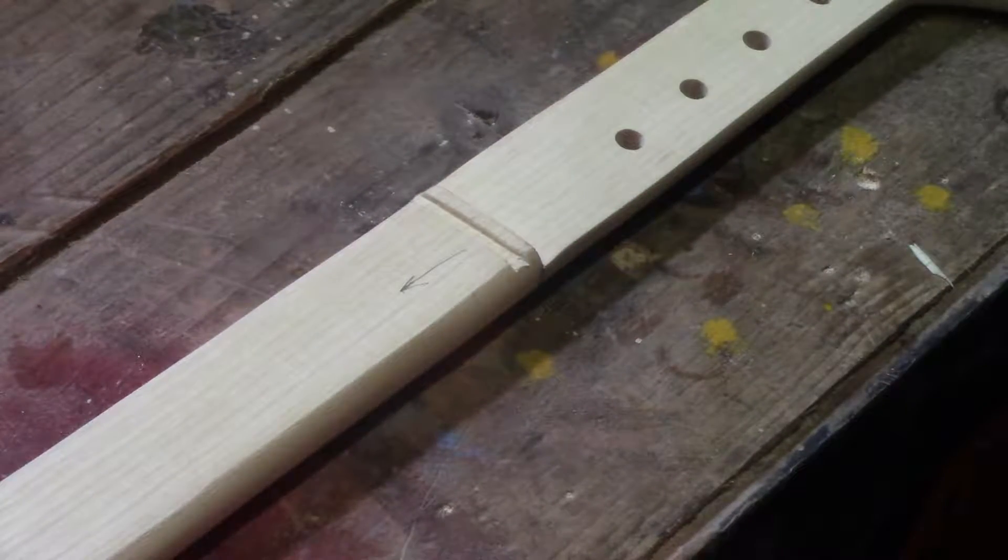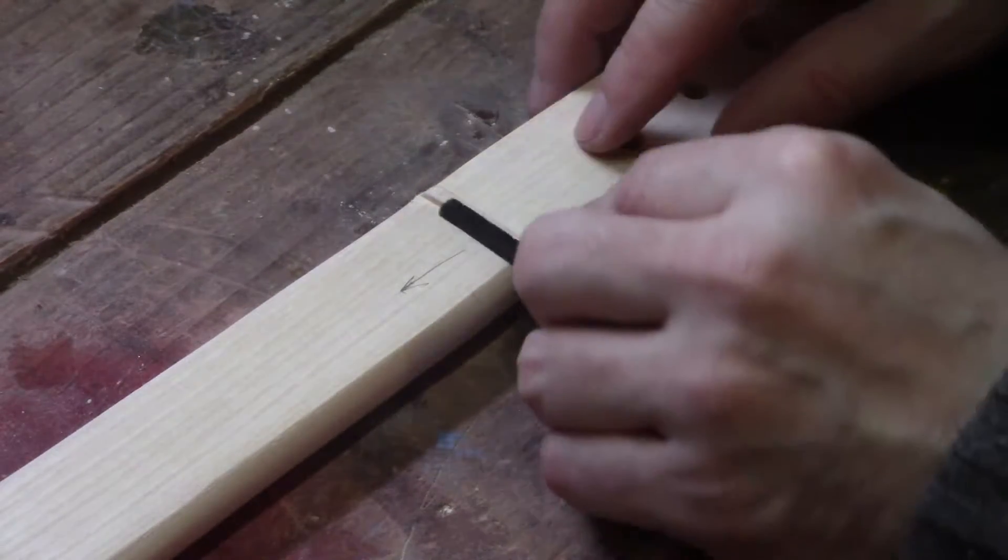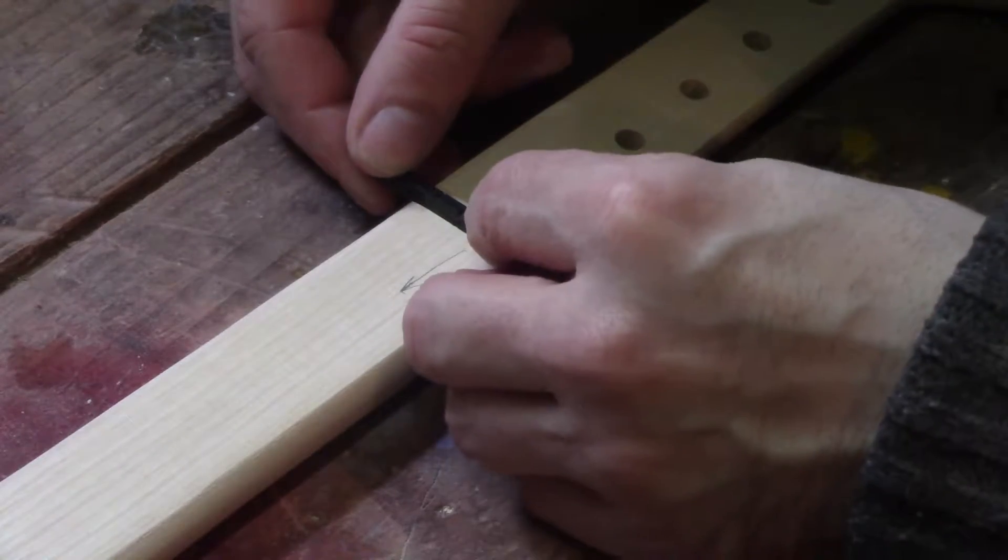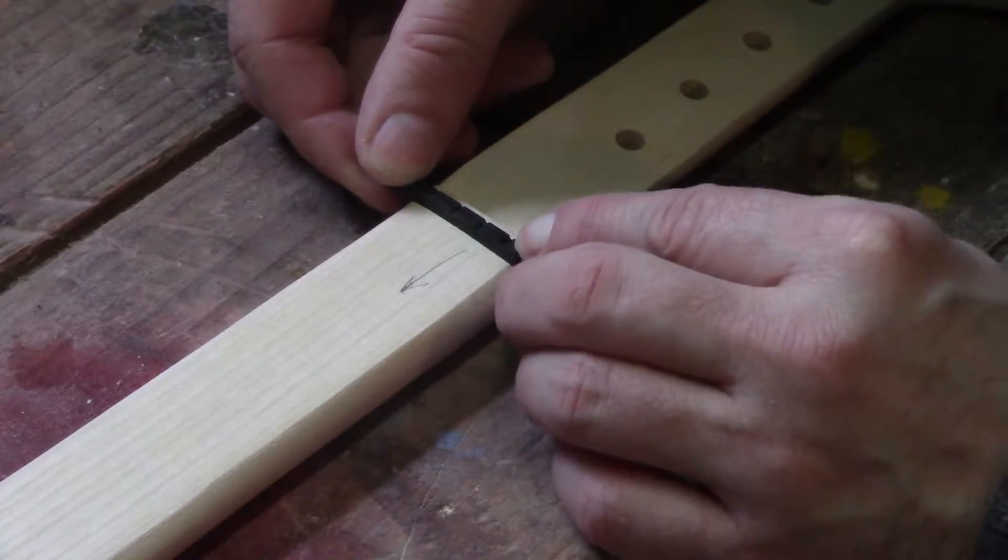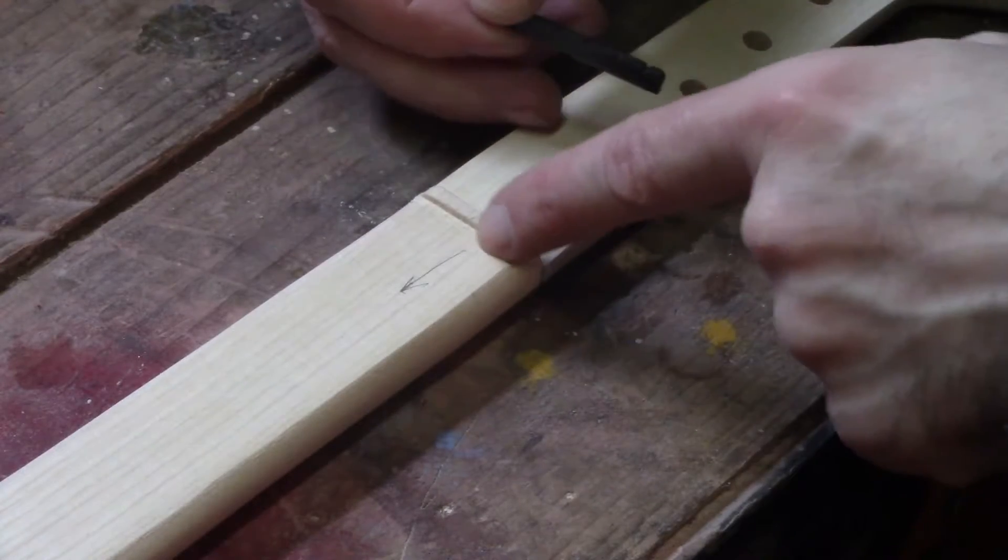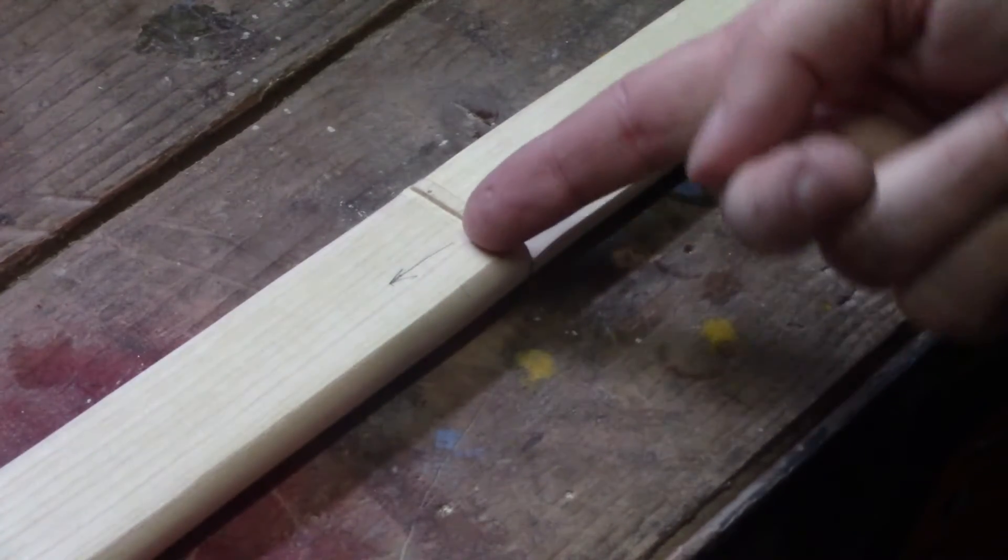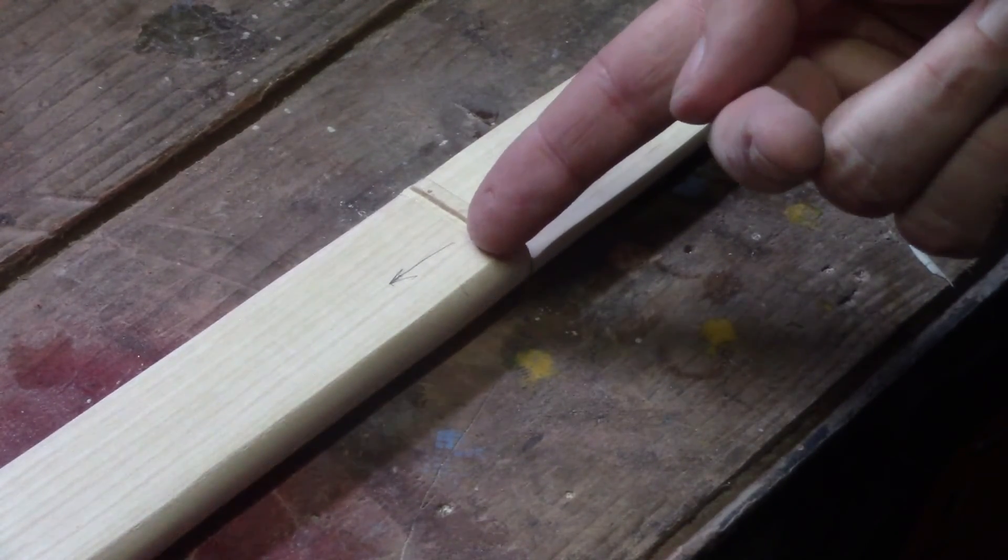Again, it doesn't have to be amazingly exact, but that's perfect. So our nut will sit in just fine and now we have from this line can be our leading edge, and we'll use that to measure our scale length.